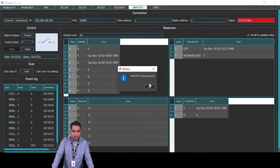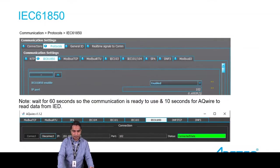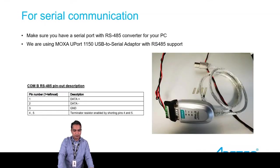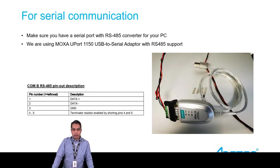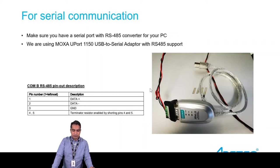DNP3 TCP is done. We are now done with Ethernet communication and will move to serial port communication. To do serial communication, you need a USB-to-serial adapter that makes a connection between the USB and the relay's RS485 port. In this test I am using a Moxa UPort 1150, which has been tested with serial communication. When testing serial communication, you go to communication connections and serial communication — one protocol at a time.